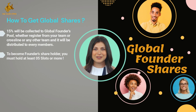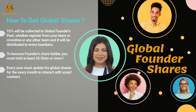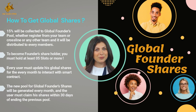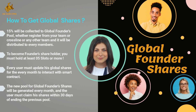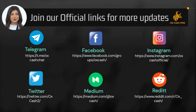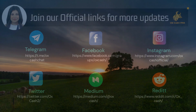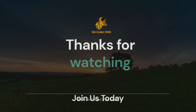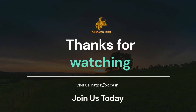To receive global shares, you must hold at least five slots or more to become a shareholder. You must also update your global shares every month by interacting with the smart contract. A new pool for global founder shares is generated every month, and users must claim their shares within 30 days of the previous pool ending. For more updates about AuxCash Pro, join our official Telegram, Facebook, Instagram, Twitter, Medium, and Reddit channels, or visit our website at ox.cash.